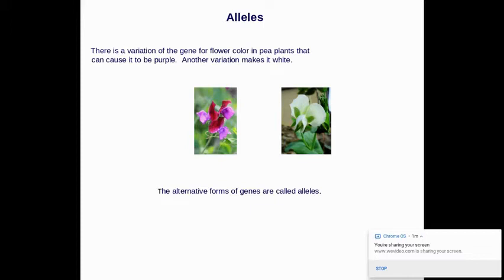So there is a variation of the gene color in a pea plant. They can either be purple or they can be white. Those are the two different alleles.